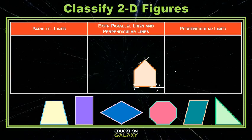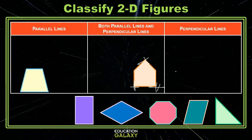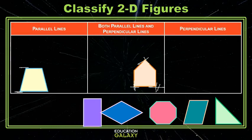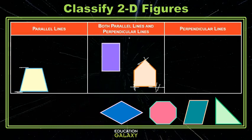Our trapezoid, the next figure, appears to have one set of parallel lines. That's just this one and this one. And then the next figure, the rectangle, has both. It has four right angles, so those are all perpendicular lines. And then opposite sides are parallel by definition.